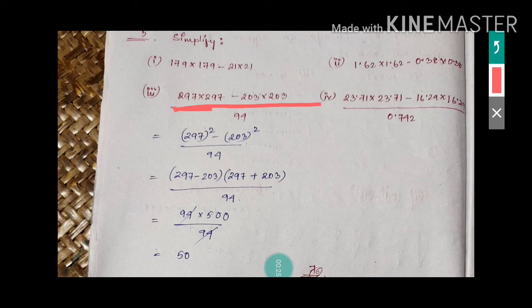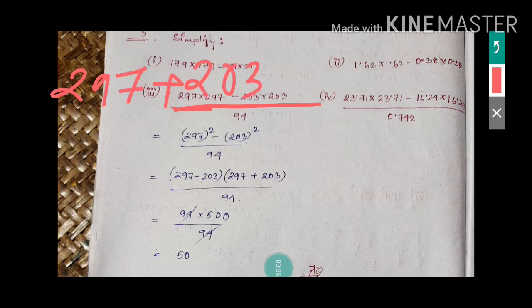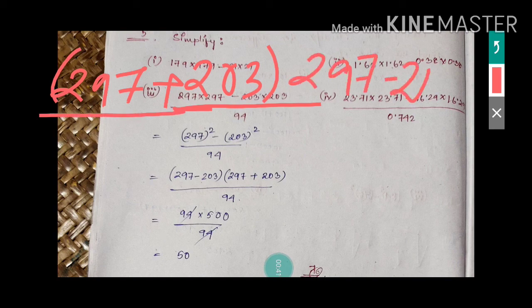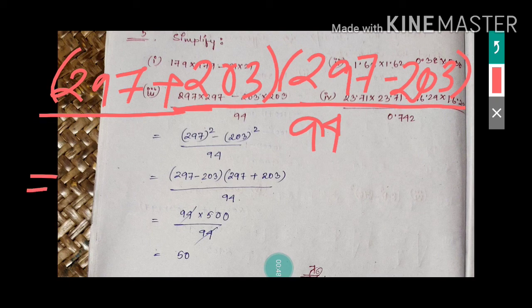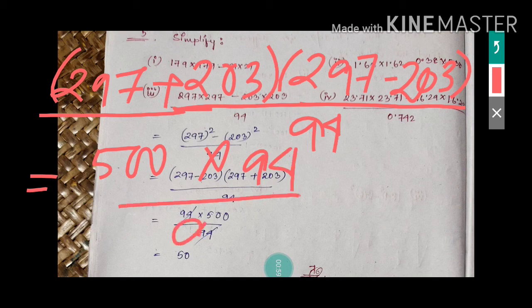Since it is a squared minus b squared, that means a plus b times a minus b. So write: a is 297, b is 203. We get (297 plus 203) times (297 minus 203), divided by 94. 297 plus 203 is 500, and 297 minus 203 is 94, and 94 is already in the denominator — so the 94 cancels.